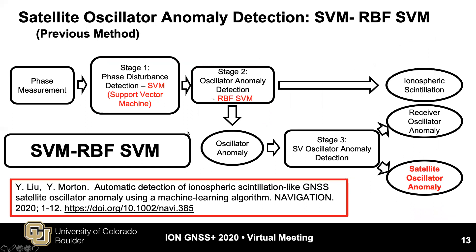Random forest is the improved detection method. We have also implemented a method called SVM-RBF-SVM, published in Navigation Journal recently. The main difference is that SVM-RBF-SVM involves two stages: the first stage detects phase disturbance using a linear kernel support vector machine, and if disturbance is detected, stage 2 distinguishes oscillator anomaly from scintillation using a radial basis function SVM, known as RBF-SVM. Due to historical reasons, the first stage has problems detecting small oscillator anomalies, where a large number of small anomalies are missed. A performance comparison between random forest and SVM-RBF-SVM will be shown later.